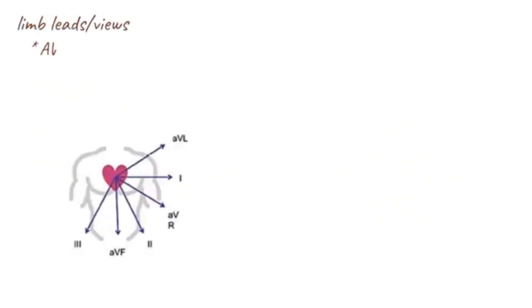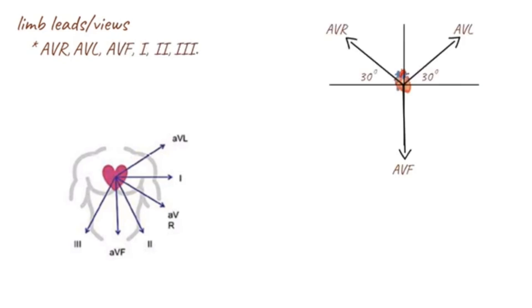There are six limb leads: AVR, AVL, AVF, and leads 1, 2, and 3. The limb leads AVR, AVL, and AVF are also unipolar leads as they only have one associated electrode. For these leads, the negative pole is also at the center of the heart.